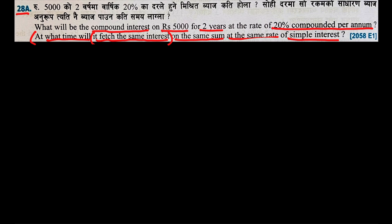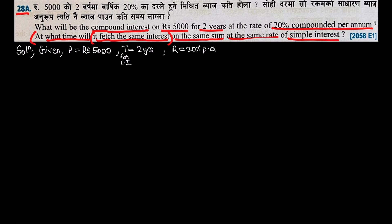Let's write out the solution for question 28. The given values are: principal P = Rs.5000, time for compound interest = 2 years, and rate = 20% per annum, compounded per annum.